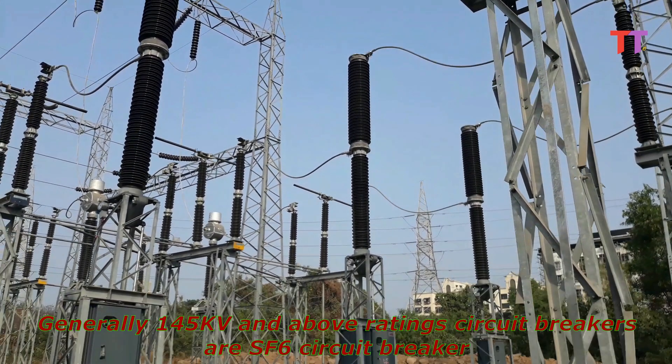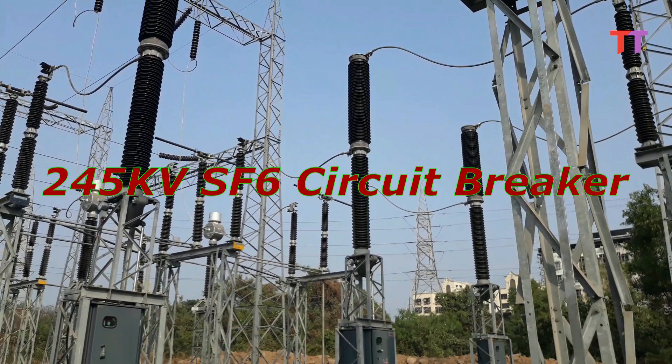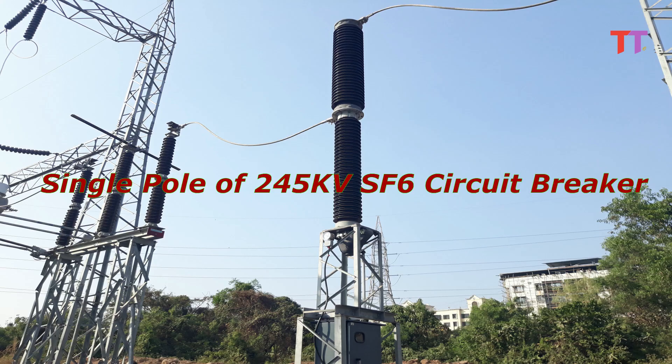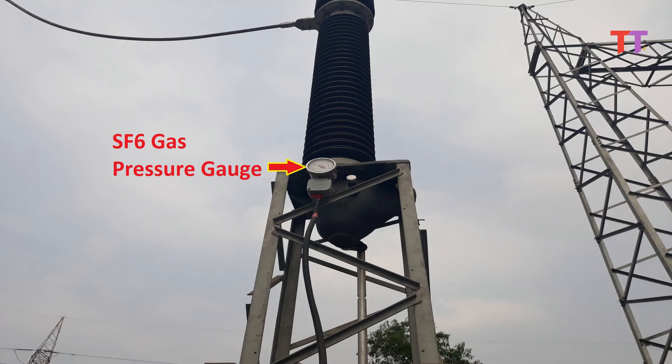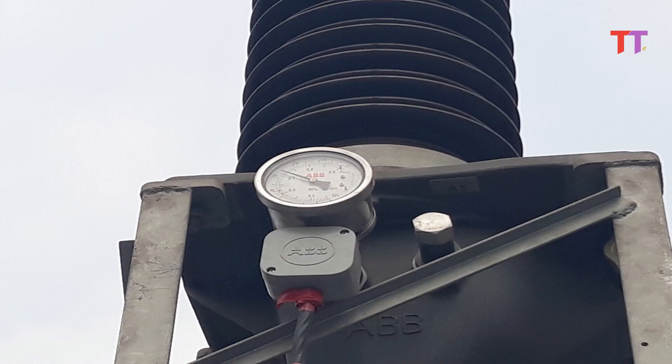Generally 145 kV and above rating circuit breakers are SF6 circuit breaker. This is 220 kV SF6 circuit breaker and this is single pole of circuit breaker. These are top and bottom connection palms where conductors are connected. This is SF6 gas pressure gauge to monitor SF6 gas pressure inside interrupter.